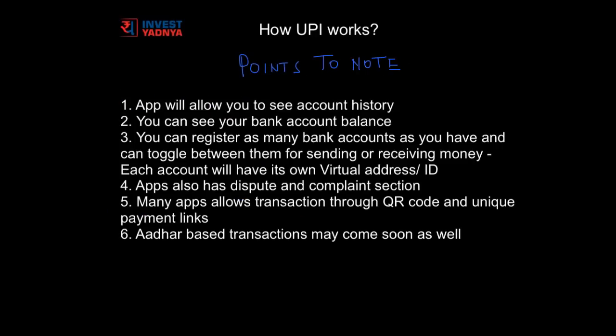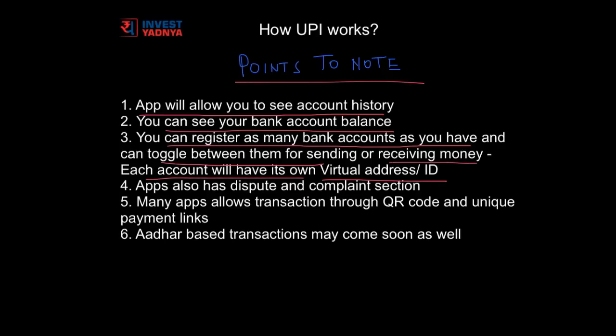Now let's discuss a few important points about how UPI works. The UPI app will allow you to see your account history — all transactions can be seen in the app itself. You can see your bank account balance at all times in real time. You can register as many bank accounts as you have; if you have three different bank accounts you can register all of them in one app and toggle between them for sending or receiving money. Each account will have its own virtual address. The app also has a dispute and complaint section where, if there is any problem with the app or any transaction, you can file a complaint.